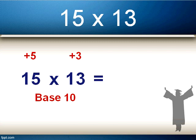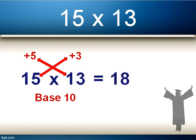The first step to getting our answer is to add the 5 to the 13, which gives us 18, or the 3 to the 15 — as you can see, it doesn't matter which one we do, as the answer is exactly the same: 18. Don't think of it as 18, because it's base 10 we need to multiply by 10, so in this case it is actually 180.